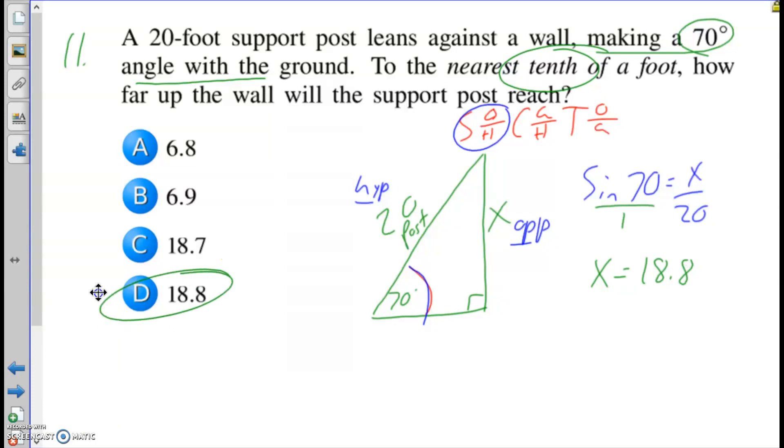18.8, which of course is choice D. You know, C is there to see if you make a rounding error. The 6.9, 6.8, that might be the length over here in case you find the wrong side.